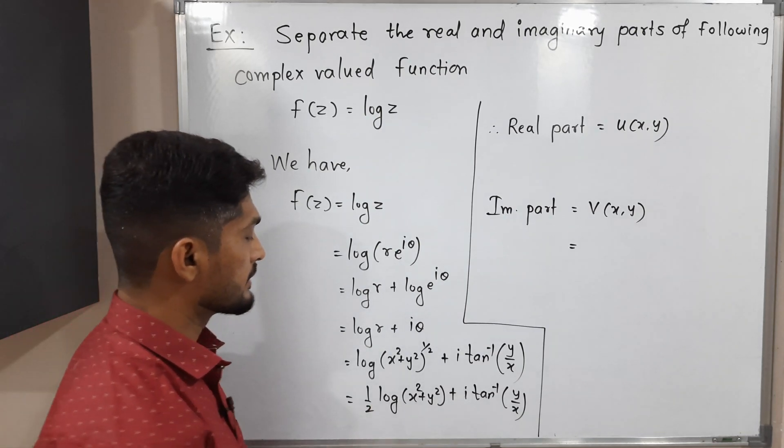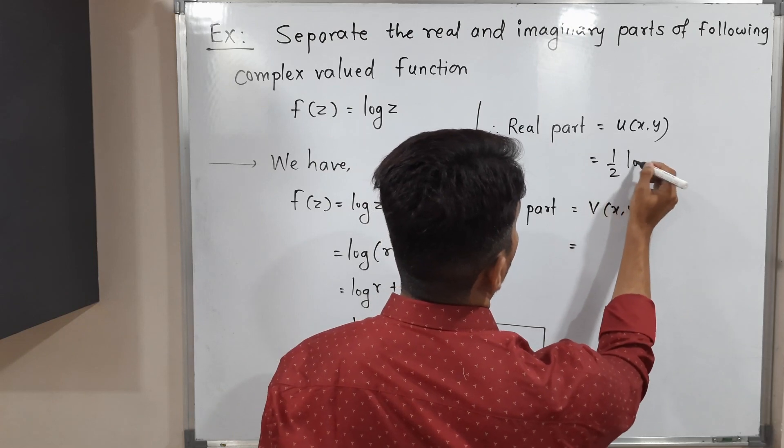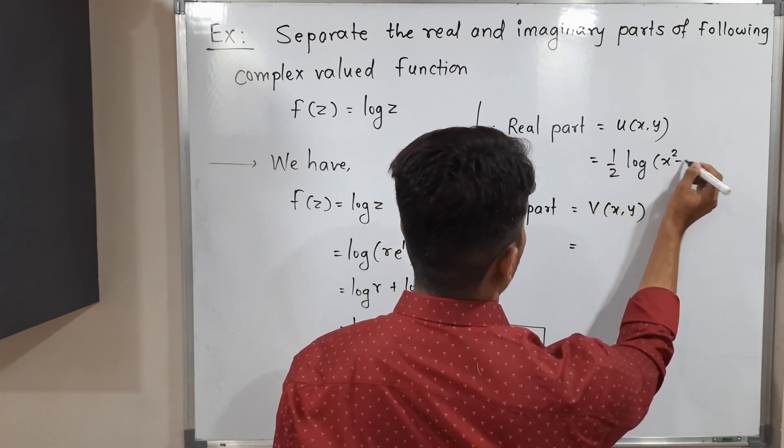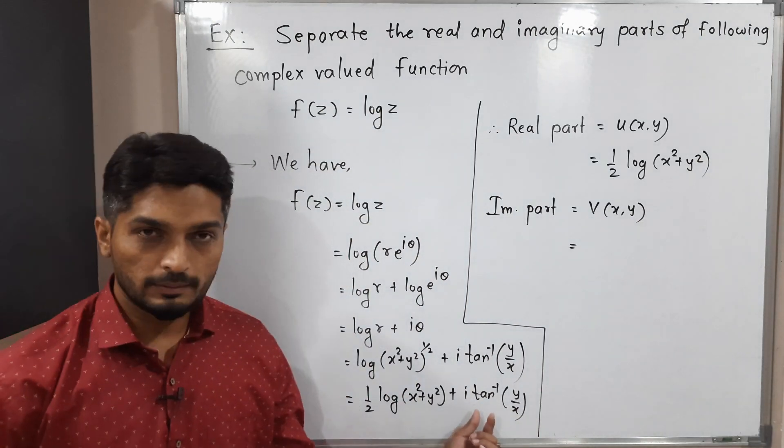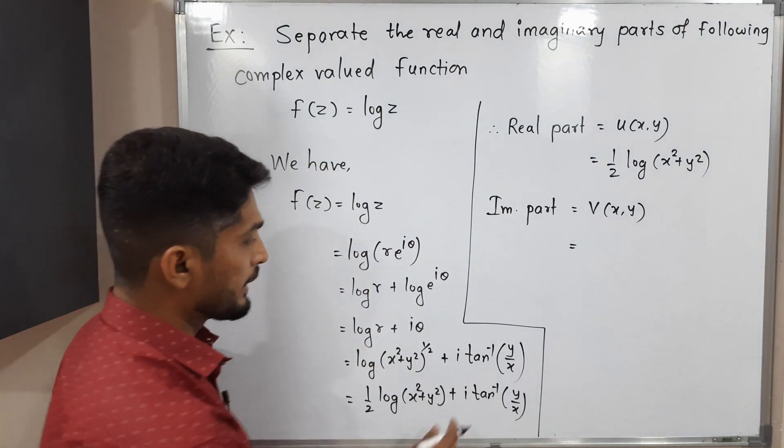The real part u(x,y) = (1/2)log(x² + y²).